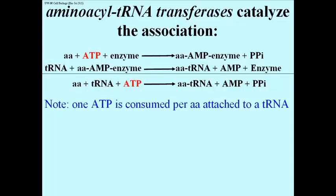Then a tRNA comes in, recognizes this energy-rich AA-AMP enzyme complex, and finishes the reaction by binding the amino acid to itself to produce an aminoacyl tRNA, liberating the AMP, disconnecting it from the enzyme, and regenerating the initial enzyme itself. You can sum up those reactions as: amino acid + tRNA + ATP → aminoacyl tRNA + AMP + pyrophosphate.